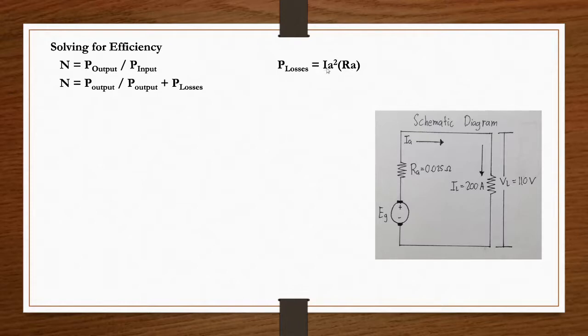Getting the power losses: armature current squared times armature resistance.